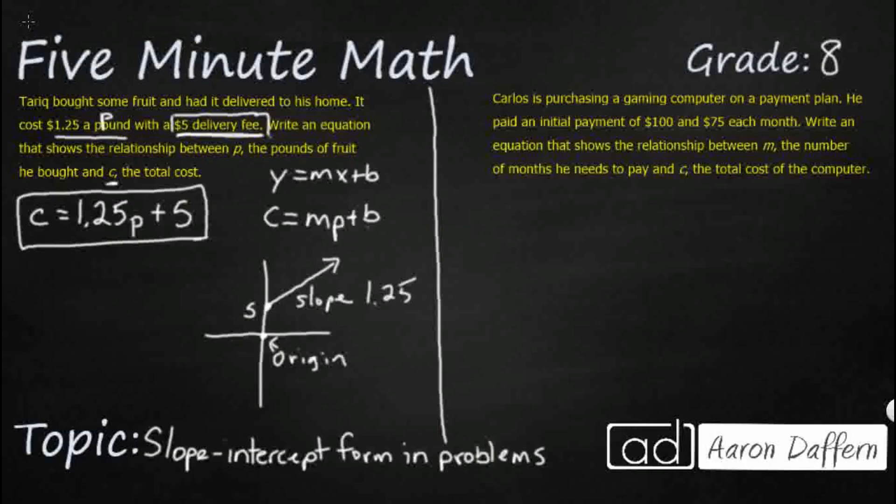Carlos is purchasing a gaming computer on a payment plan. He paid an initial payment of $100 and then $75 each month. Notice the same thing. We're going to get one amount that is standing alone right here. And then we are going to get another one that is tied to a unit.